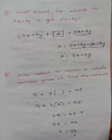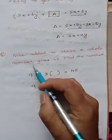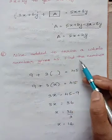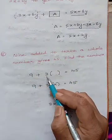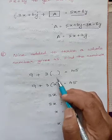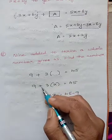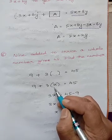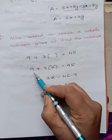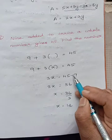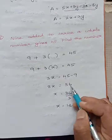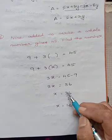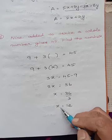Fifth question: 9 added to thrice a whole number gives 45. Find the number. We don't know the whole number, so let it be x. So 3x plus 9 equals 45. Plus 9, when taken to the other side, becomes minus 9. So 3x equals 45 minus 9, which is 36. Since 3 is in multiplication, it becomes division: 36 divided by 3 equals 12. Therefore the value of x is 12.